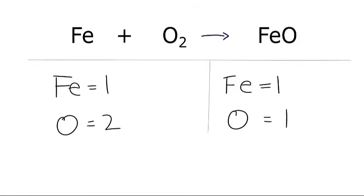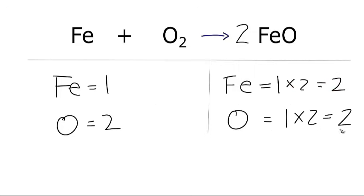For this equation, I've already counted the atoms up, so let's see what we can do to change our coefficients. The irons are equal, but we have 2 oxygens on the reactants and 1 on the products. So I'm going to change the coefficient in front of the FeO molecule. If I put a 2 here, 1 times 2 gives me 2 oxygens. But I also have to account for the iron — 1 times 2 equals 2. I've fixed the oxygens, but now the irons aren't balanced. So if I put a 2 on the reactant iron, 1 times 2 equals 2, and now everything is balanced. Sometimes changing one molecule will mess up the others, but you need to go through that to get the final balanced equation.